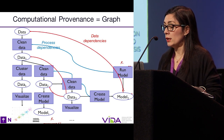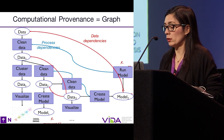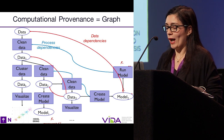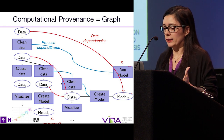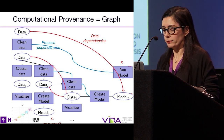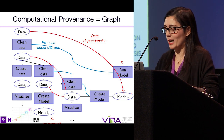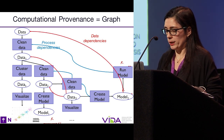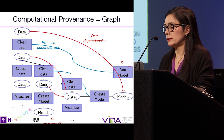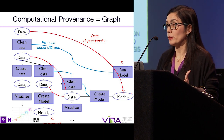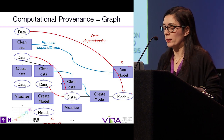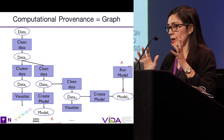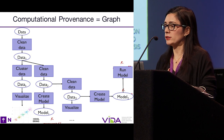You have these data dependencies — like for example, the final model that I created depends on everything that happened beforehand. In particular, there are dependencies on other datasets: the input data, the clean data, the clean data the second time around. And you also have process dependencies — in order to run the model, you first must clean the data multiple times. Or if you're trying to visualize particular data, it has to be cleaned before. So provenance, in the computational sense, is a causality graph.